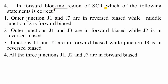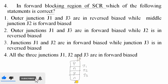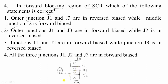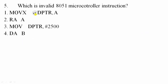Question 4: In the forward blocking region of an SCR, the SCR has PNPN junctions forming three junctions J1, J2, J3. The anode is connected at one end and the cathode at the other. To reduce the forward blocking voltage, gate pulses are provided. J1 and J3 are forward biased while J2 is in reverse bias or forward blocking mode. Option 2 is correct: outer junctions J1 and J3 are forward biased while J2 is reverse biased.